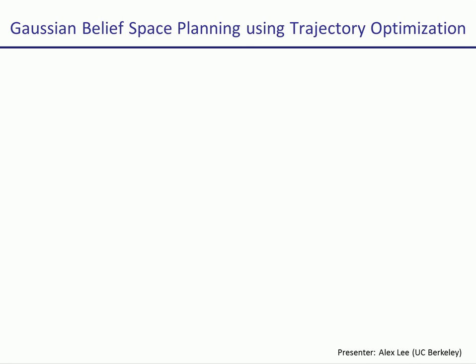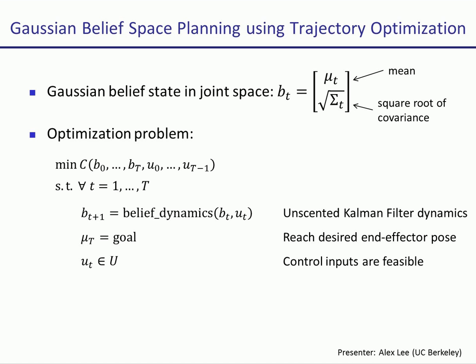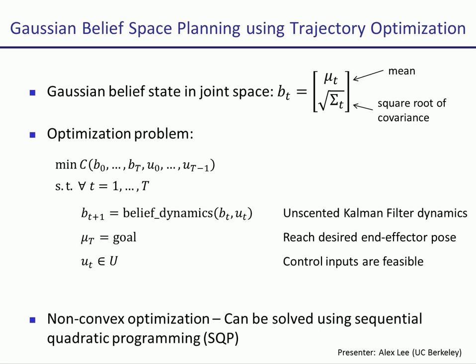Trajectory optimization can be used to find locally optimal solutions to the Gaussian belief-space planning problem. The variables in the optimization consist of the belief of the state and the control for all time steps, where the belief consists of a mean and a covariance matrix. The optimization problem minimizes some cost objectives depending on the belief and controls such that, for all time steps, the Kalman filter updates for the belief are satisfied, the robot reaches the goal, and the controls are feasible. This optimization problem is non-convex, but we can find a locally optimal solution using sequential quadratic programming.